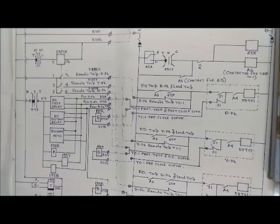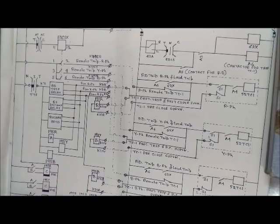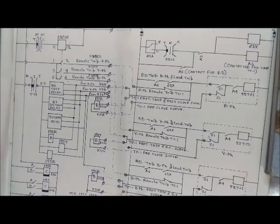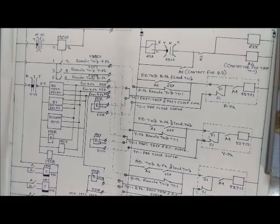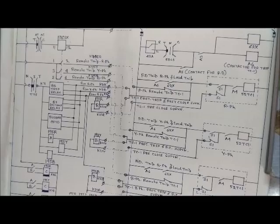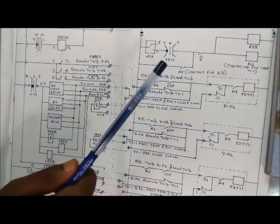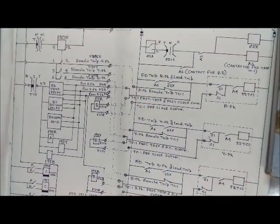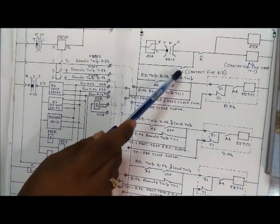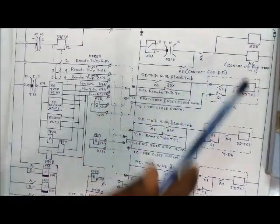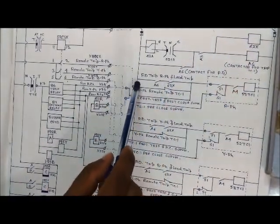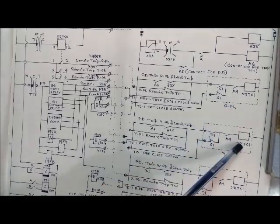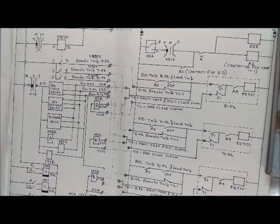For pole discrepancy trip of the circuit breaker, there should be a mismatch of poles — either one or two poles should be in a different ON or OFF condition, i.e., the three poles should not all be in the same position. The A5 relay will energize, and after a time delay of 1.2 to 1.5 seconds, its contact will close. As soon as that contact makes, this relay energizes and gives the tripping pulse to R phase, Y phase, and B phase — tripping all poles of the circuit breaker.